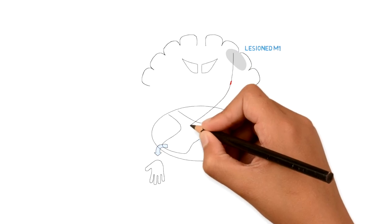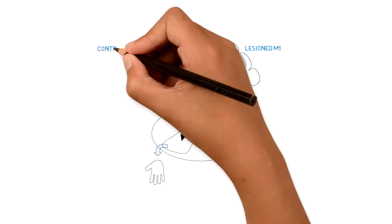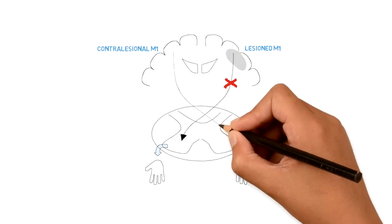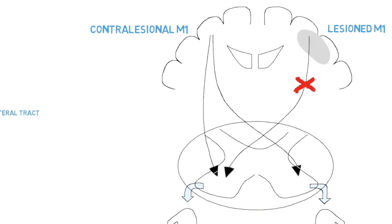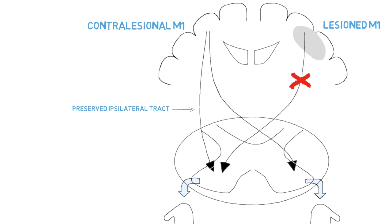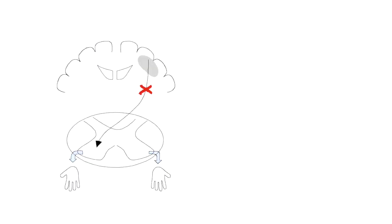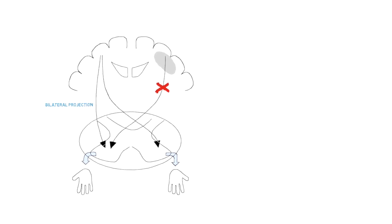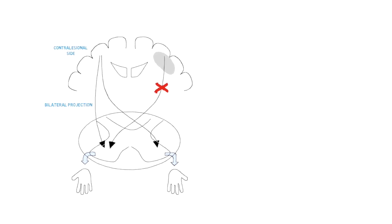...it is the gray area indicated in the animation — the contralesional or healthier side of the brain is stronger. This results in a preserved ipsilateral corticospinal tract that is stronger than in typical development. Together with the typical contralateral corticospinal tract, some children with unilateral brain injury develop a bilateral projection from the contralesional side to both hands.